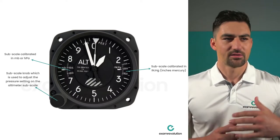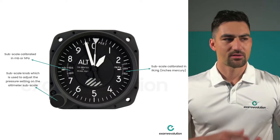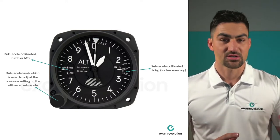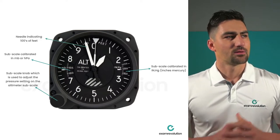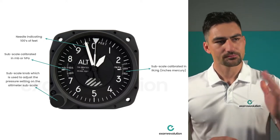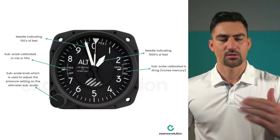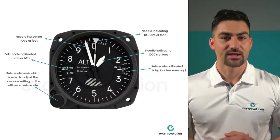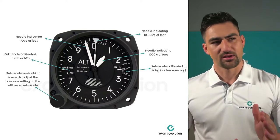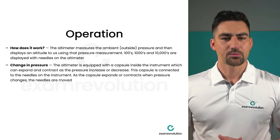When you fly with an altimeter that has both subscales, you can fly in any country — in America they'll give your pressure setting in inches of mercury, and in other countries in hectopascals. Most altimeters just have the hectopascal subscale. The long needle indicates hundreds of feet, the shorter one indicates thousands of feet, and the one with a triangle indicates tens of thousands of feet.